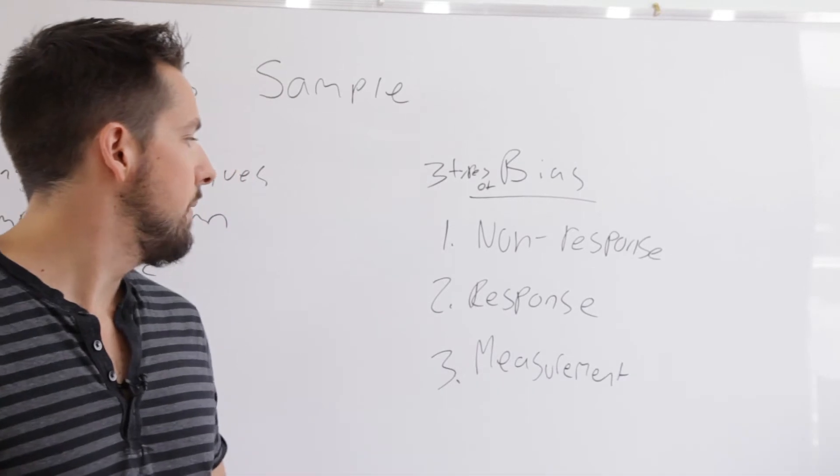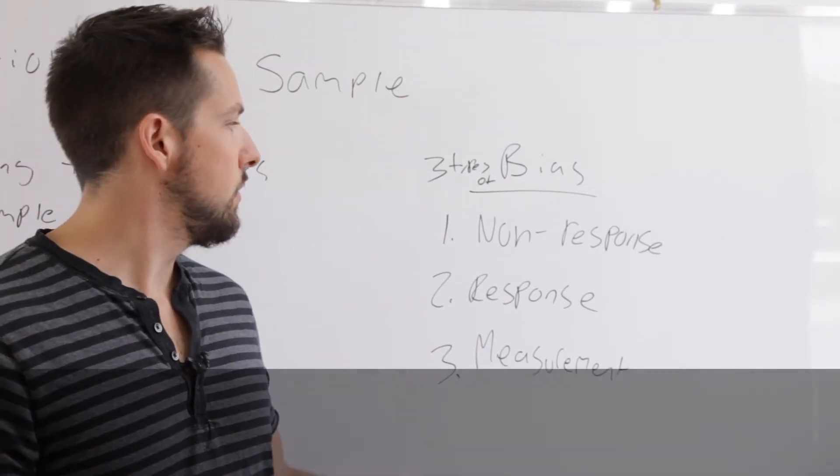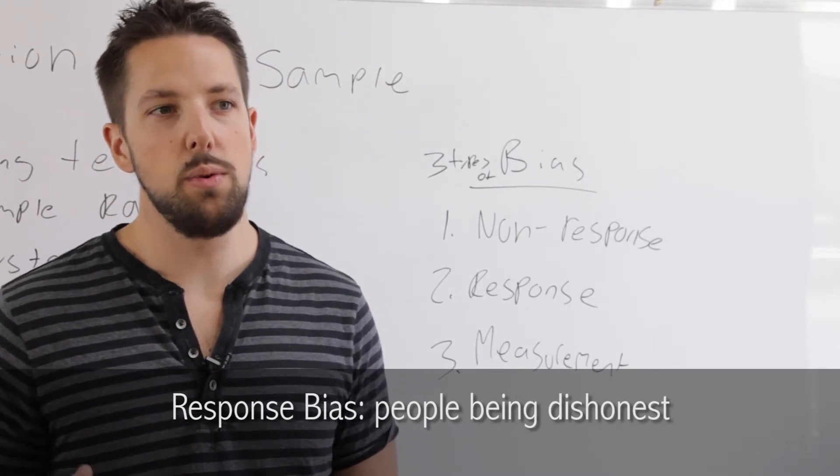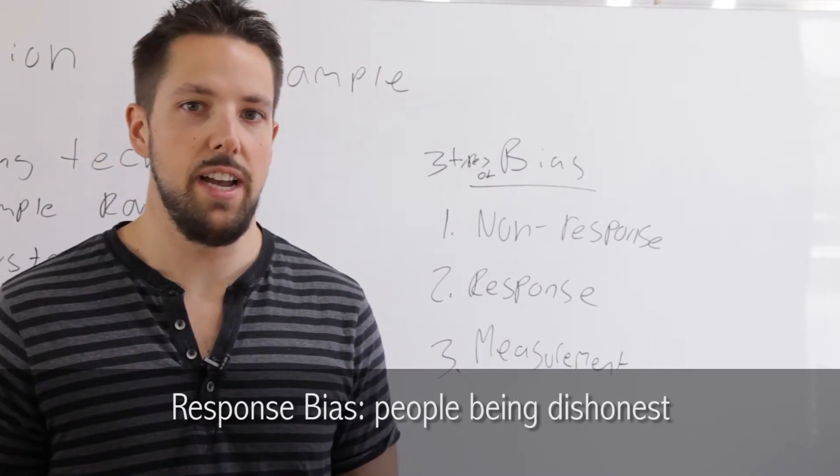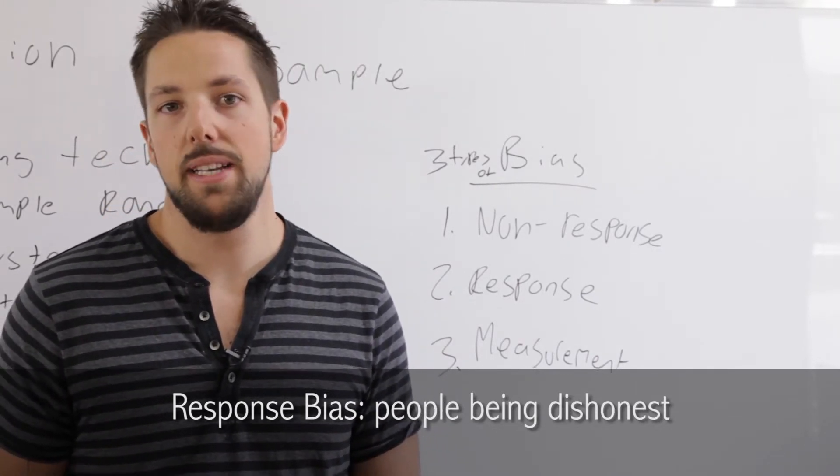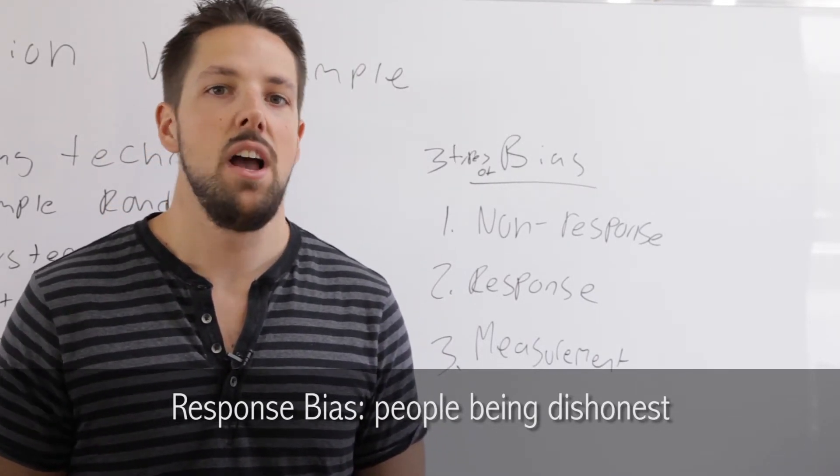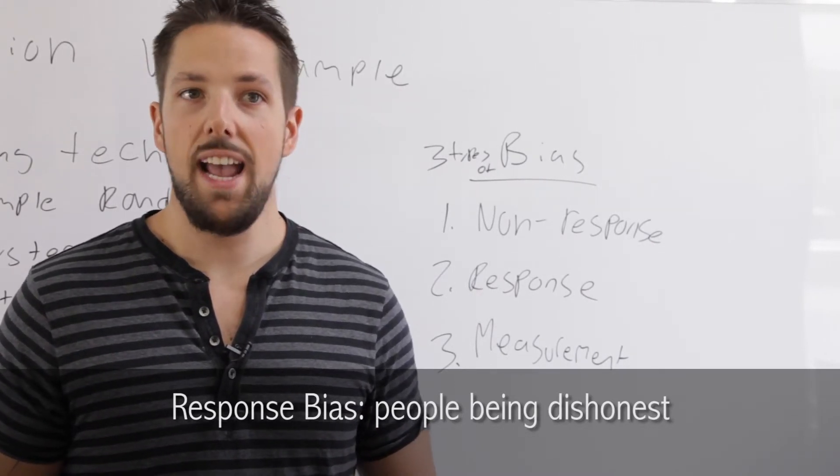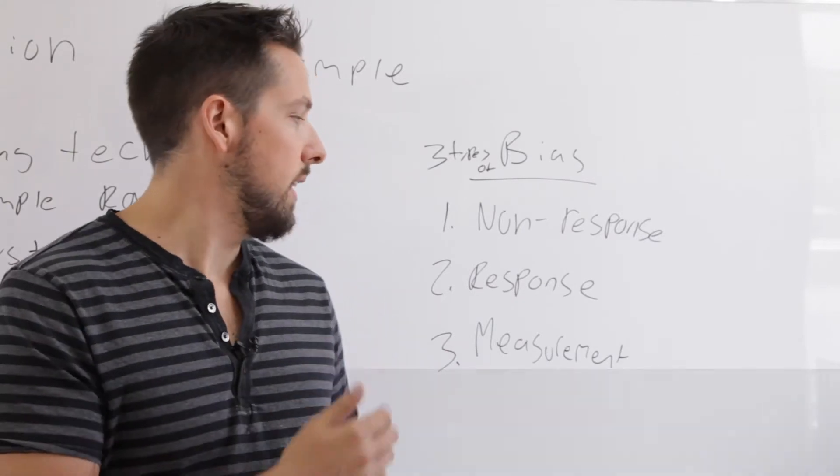The next type we have is response bias. Don't mix these two up because they have similar names. Response bias occurs when people lie on the survey. If you put out a question that says, how much do you weigh? People may be sensitive about it and deliberately lie. Or if you say, have you ever taken illegal drugs? People will not want to answer that honestly. That's response bias.